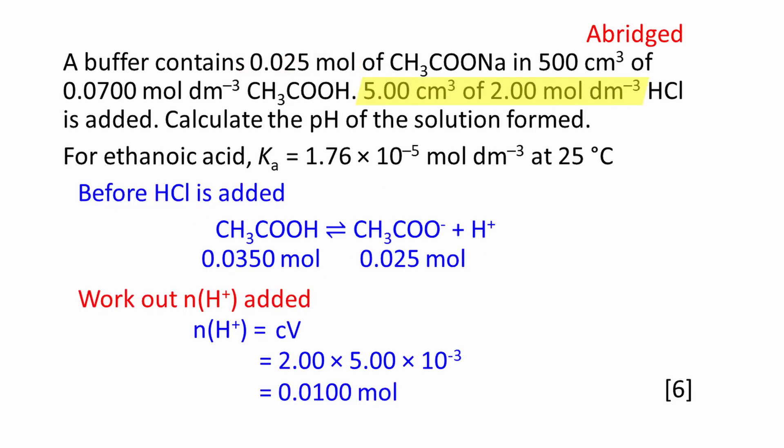Hydrochloric acid, HCl, is monoprotic. The concentration of H plus ions in the HCl is also 2.00 moles per decimetre cubed. We can work out the amount of H plus ions added using concentration multiplied by volume. This works out to be 0.0100 moles.